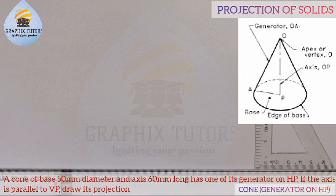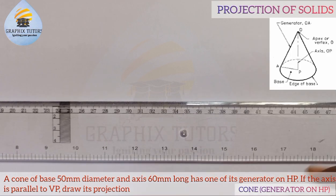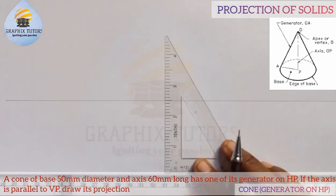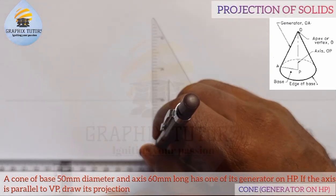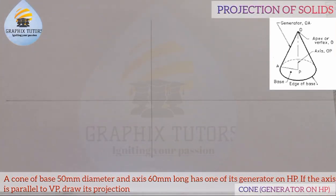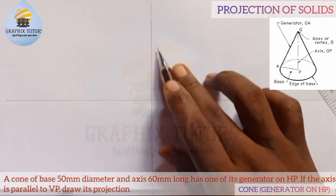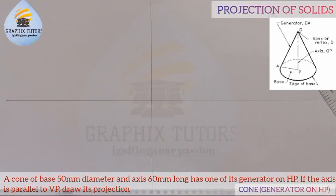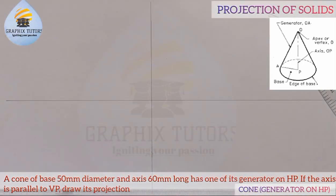Knowing this fully well, let us interpret this question. First, draw our planes — we have the horizontal plane and the vertical plane. So I draw my horizontal and vertical plane. This is the horizontal plane (HP) and this is the vertical plane (VP). I'll leave some space so that nothing touches my reference lines.